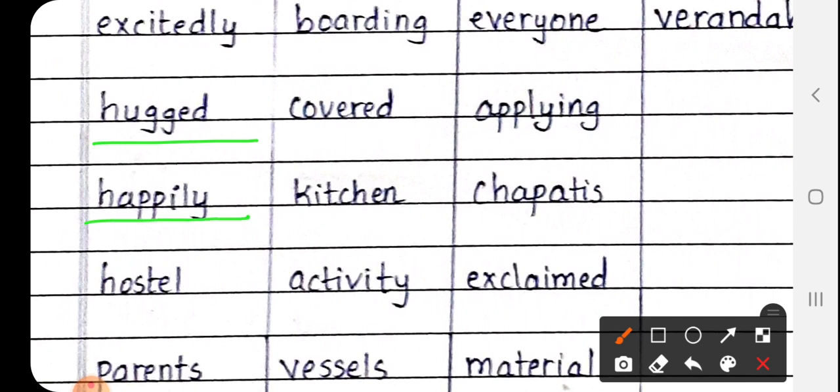Next is Happily, H-A-P-P-I-L-Y. Happily means Khushi se. Next, Hostel, H-O-S-T-E-L. Hostel means Khatra Vas.